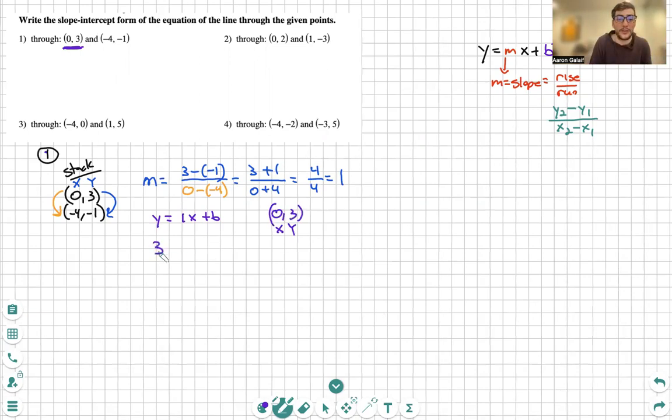We plug in three for y. Zero for x. And we solve. One times zero is zero. And we immediately see three is equal to b.